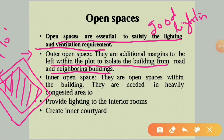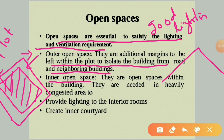We are not going to construct completely over the plot area — we must provide some open space. The outer open space is the additional margin left within the plot to isolate the building. The inner open space is the open space within the building, needed in heavily congested areas to provide lighting to the interior rooms.